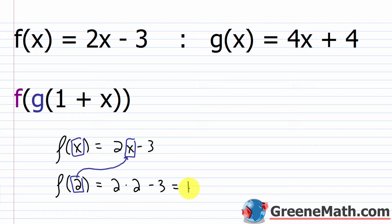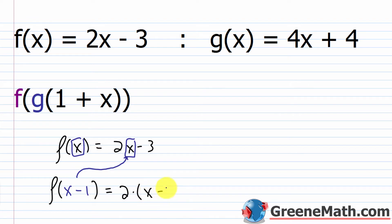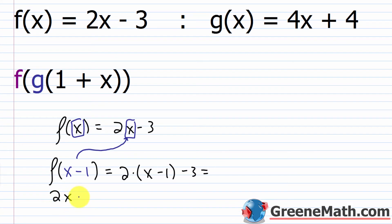Now, I'm not limited to just plugging in numbers for my variable. I can take something more complex and plug it in. What if I said I want f of x minus 1? All I'm going to do is plug in x minus 1 for x. So I would have 2 multiplied by the quantity x minus 1, then minus 3. Using the distributive property: 2 times x is 2x, minus 2 times 1 is 2, then minus 3. So 2x, and negative 2 minus 3 is minus 5. Therefore f of x minus 1 equals 2x minus 5.